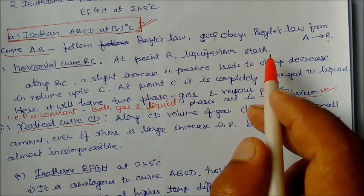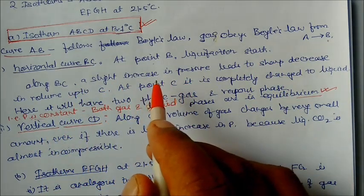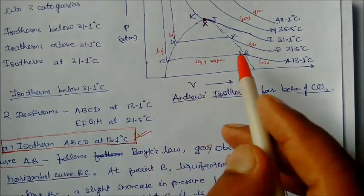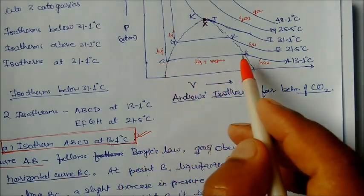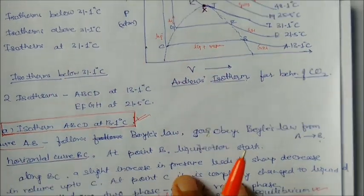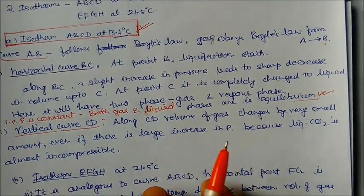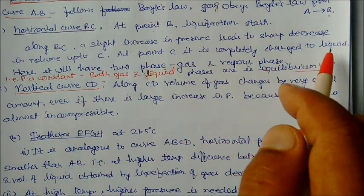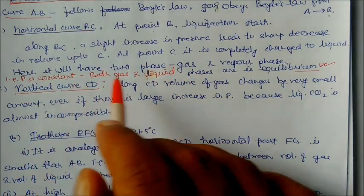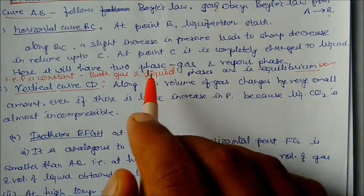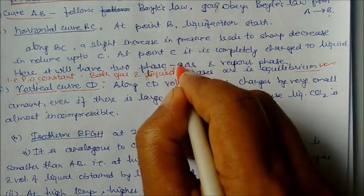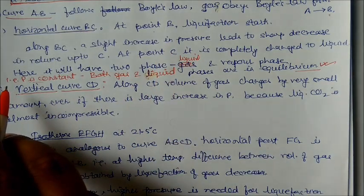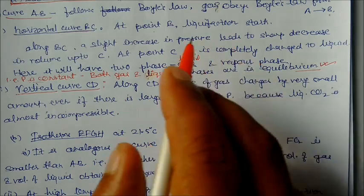Along BC, a slight increase in pressure leads to a sharp decrease in volume, as the gas is converting into liquid state — it is neither fully gas nor fully liquid, but a mixture of vapor and liquid. At point C, it is completely liquid. Between B and C, pressure is constant, so both the liquid and vapor phases are in equilibrium with each other, and the gas has a vapor pressure at equilibrium.